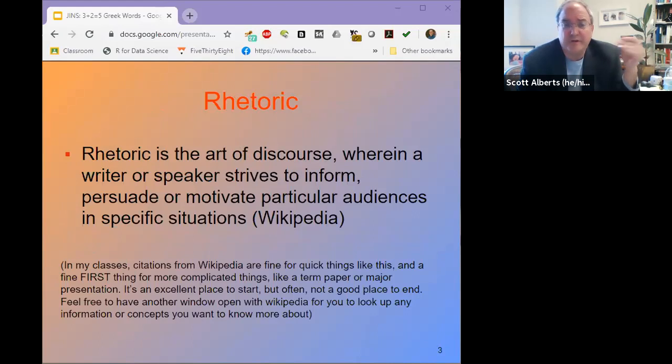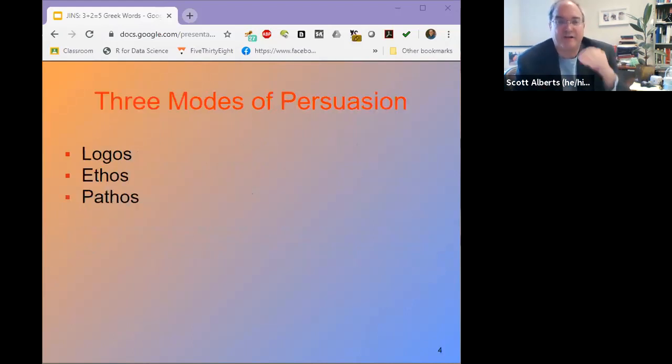Rhetoric is a whole field of its own. And the idea is that we do want to inform, persuade, and motivate audiences about what we're doing. And if you're really interested in that, you should take a whole class or learn about that more directly. And here at Truman, our students all do, for the most part, take a class where rhetoric is covered very centrally. When you do take that class, one of the things they talk about are the three modes of persuasion. And logos, ethos, and pathos are the three words that we really do want to focus on.